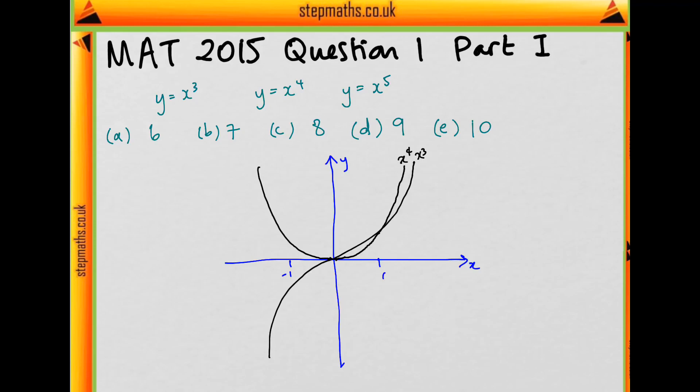So for x⁵, then between 0 and 1, x⁵ is going to be smaller than either of the other two. And at 1 they're all equal, they're all equal to 1. Then afterwards, x⁵ will grow steeper than either of the other two. And similarly,